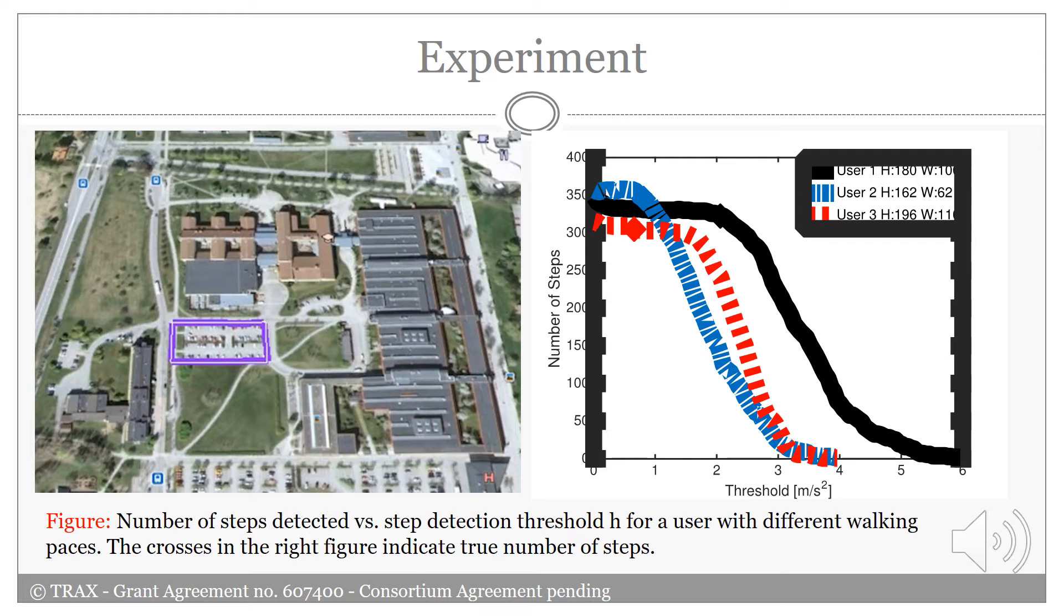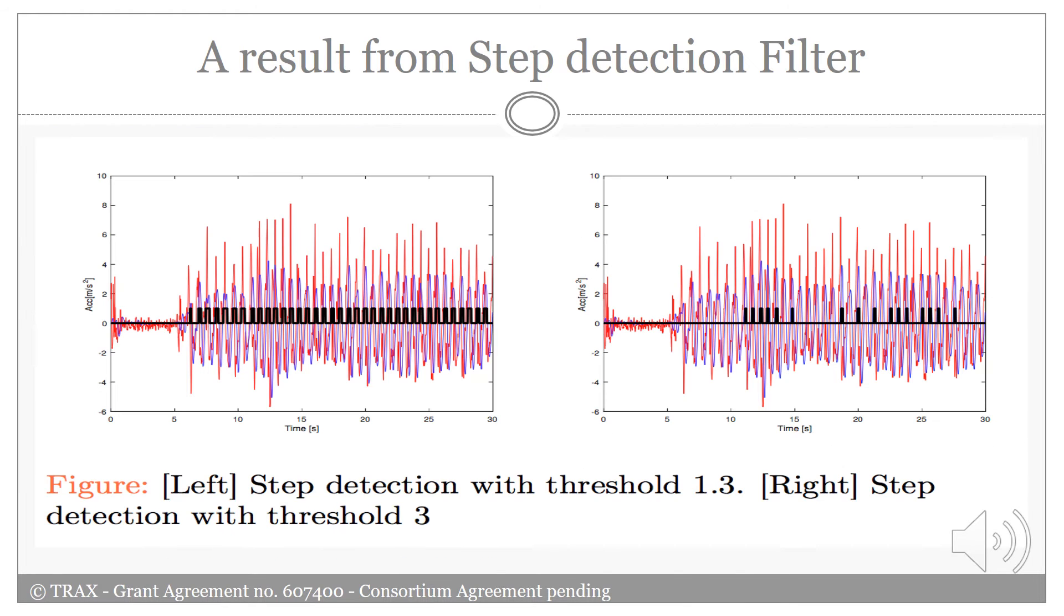As the right figure shows, the threshold for each measurement is unique. Furthermore, choosing too large thresholds will underestimate the number of detected steps. For instance, the number of detected steps for user 2 drops rapidly for thresholds larger than 1 meter per second squared. Here is the result of our step detection algorithm in order to show how threshold can affect number of detected steps. The selected threshold for the left figure is 1.3 and for the right one is 3. As you can see, the step detection is so sensitive to the threshold selection.